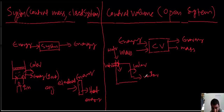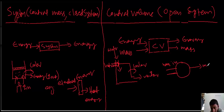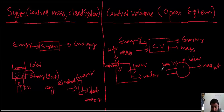Another example: consider a turbine. Mass will be coming in as well as mass will go out. If the ambient temperature is cooler or hotter, energy interaction also takes place. So here both energy interaction and mass interaction are present.